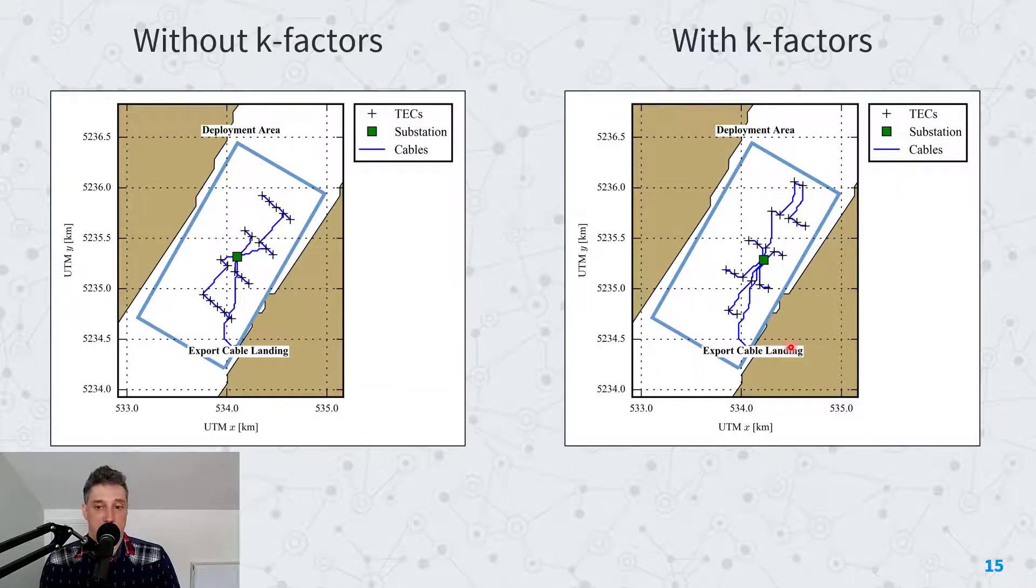But what was interesting is we found that actually the array designs changed between the array with k-factors and the array without k-factors. What's driving this is you'll notice that on the right hand side for the array with k-factors there are more lines than on the left hand side without.